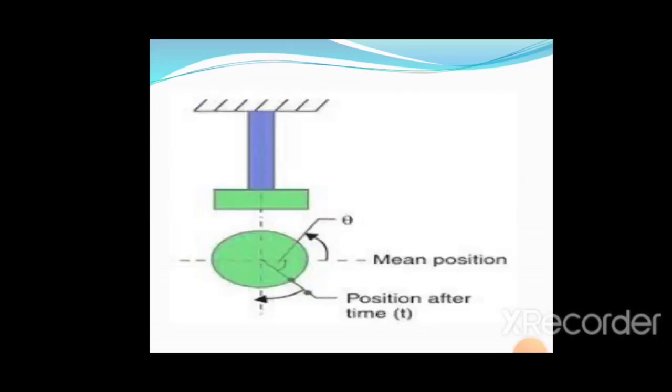This pictorial diagram shows a shaft hinged at one end with a disc attached at the other. When applying torque to the disc, it will get twisted with some angle theta about its mean position. After releasing, it undergoes oscillatory vibrations.